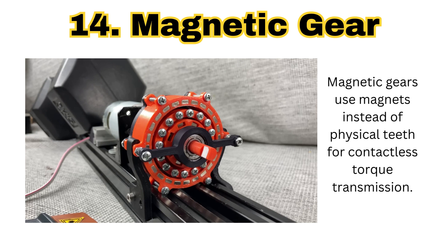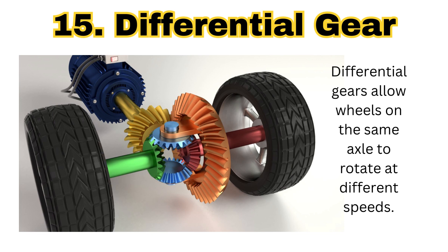The next type of gear is the magnetic gear. Magnetic gears use magnets instead of physical teeth for contactless torque transmission. Applications include clean environments such as wind turbines and magnetic resonance imaging — MRI machines use magnetic gears.